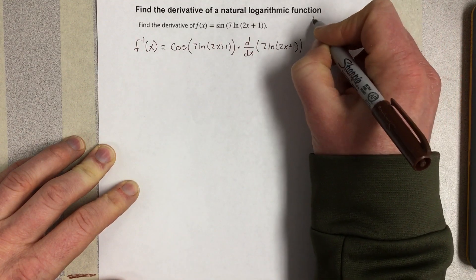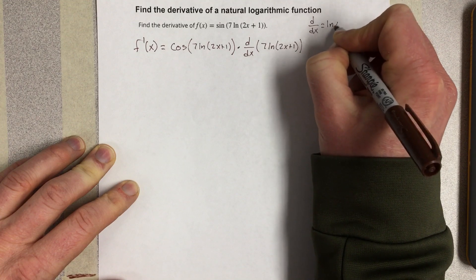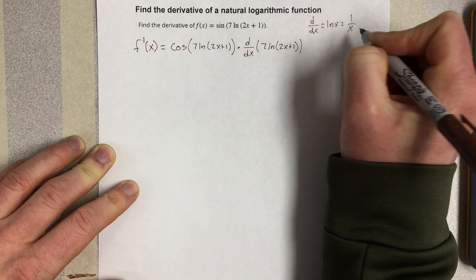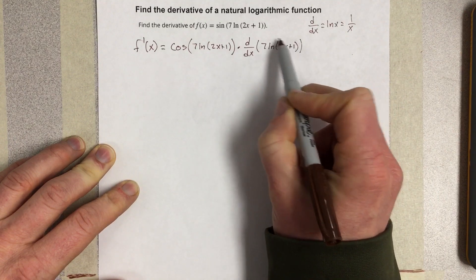Now remember, the derivative of natural log is 1 over x. So when I take this derivative,